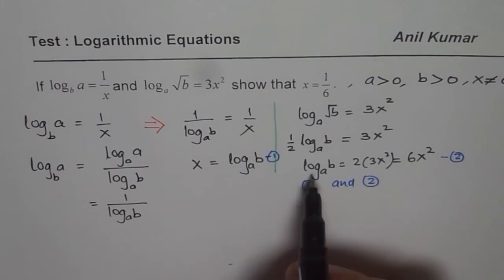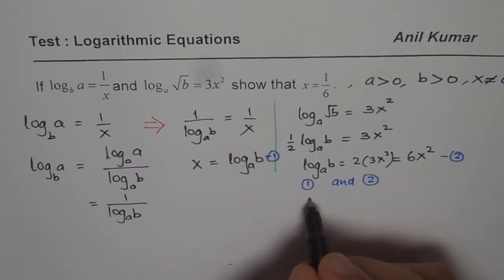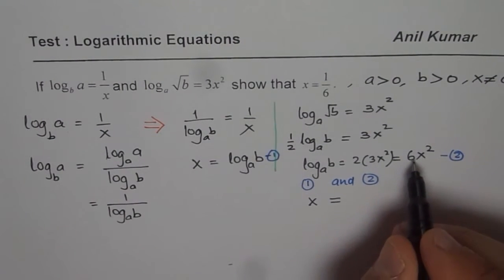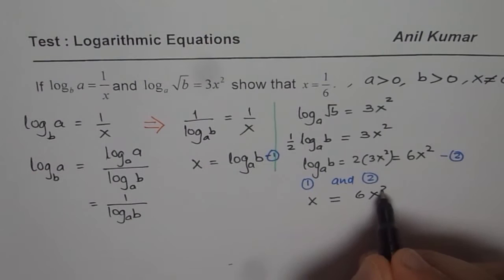So from equation 1, log a of b is x. So I am writing x here, equals to 6x square. Perfect.